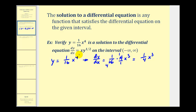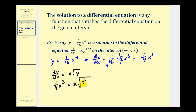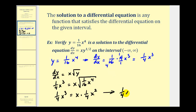Now we have enough information to verify that this function is a solution. To verify that dy/dx equals x times y to the one-half, written as x times the square root of y, we have (1/4)x to the third equals x times the square root of (1/16)x to the fourth. Since (1/16)x to the fourth is a perfect square, this equals x times (1/4)x squared, giving us (1/4)x to the third equals (1/4)x to the third. This verifies the given function is a solution.